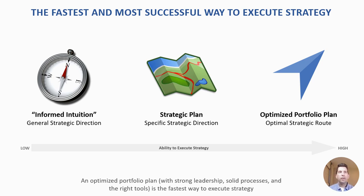There are three basic ways of executing strategy. You could use informed intuition — a senior leader's gut feeling. A lot of companies operate on this principle, and I'd liken it to a compass: directionally accurate, but not very specific.